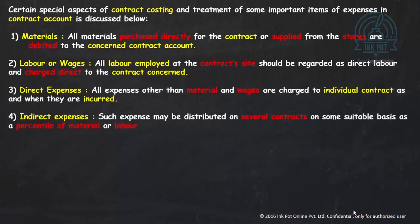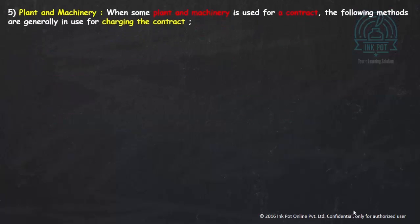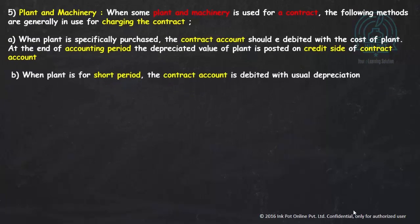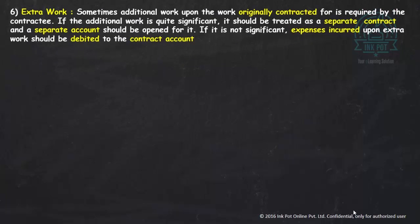Plant and machinery is also an expense — specifically, depreciation on plant and machinery. There are two ways to show this in the contract account: either show the depreciation directly, or show the opening value of plant and machinery on the debit side and the closing value on the credit side, so the difference automatically represents the depreciation.